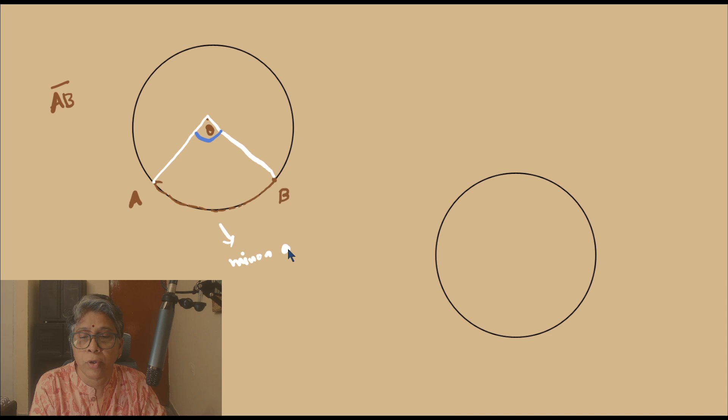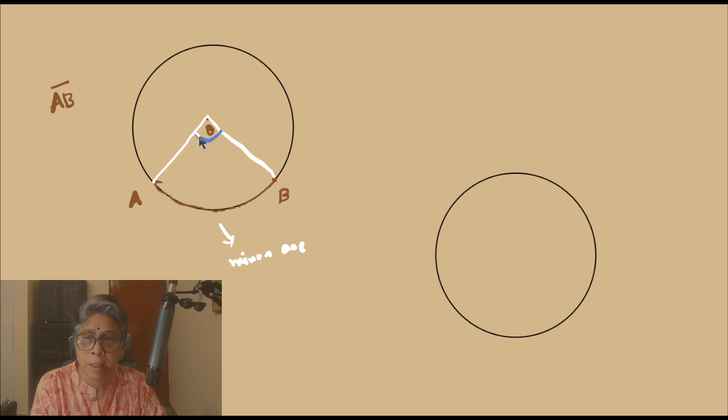So if you are talking about the angle subtended by the minor arc AB, that is this angle — let me call the angle theta.